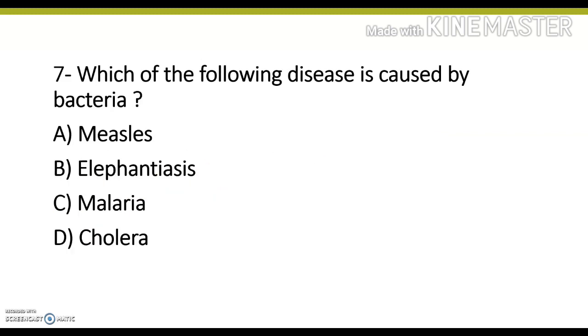The following disease is caused by bacteria: measles, elephantiasis, malaria, or cholera. Its correct answer is option D, cholera, caused by bacterium Vibrio cholerae. Measles is a viral disease caused by rubeola virus. Elephantiasis is caused by filarial worms, also called filariasis. Malaria is caused by plasmodium parasite.